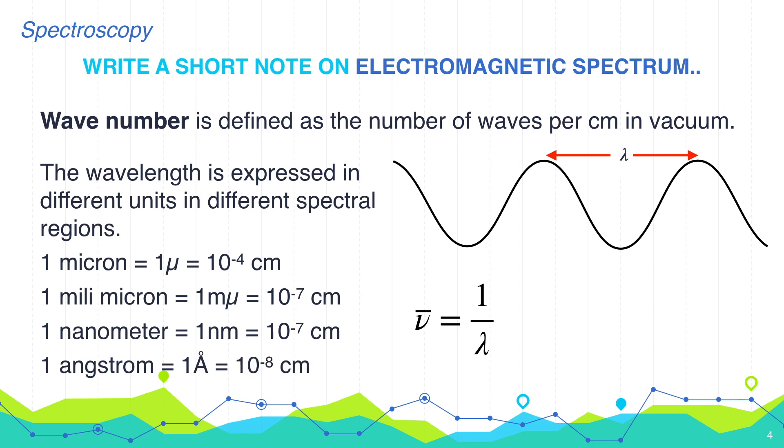The relation between wave number and wavelength is nu bar is equals to 1 by lambda. They are reciprocal to each other. There is one more very important component is energy of the radiation which is given by h nu or hc by lambda.